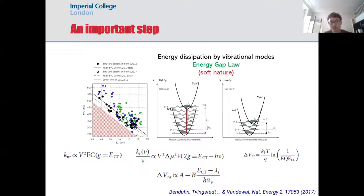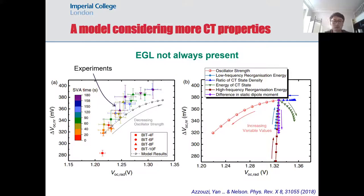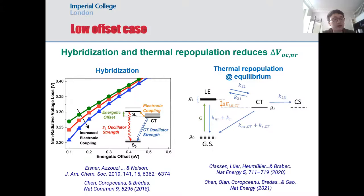One of the major breakthroughs happened in 2017 by Koen Vandewal's group, where they observed that the non-radiative voltage loss decreased linearly with the energy of CT state. They invoked the concept of energy gap law. We took one step further trying to implement more properties of CT state into a model, because in reality we found that the energy gap law is not always present.